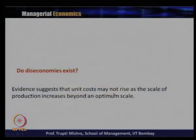Do diseconomies actually exist? Evidence suggests that unit costs may not rise sharply as scale of production increases beyond the optimum scale, but there is still a limit. The increase in cost beyond optimum may be moderate — a kind of fluctuation — and once costs reach their maximum, economies of scale can re-emerge.